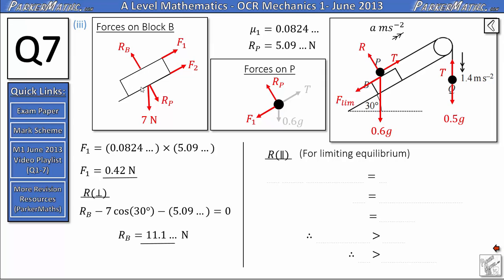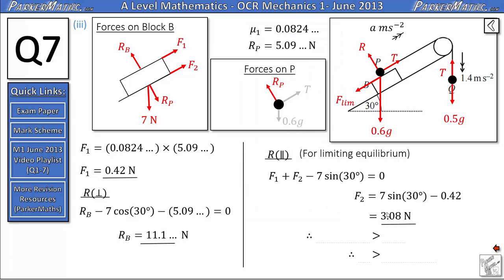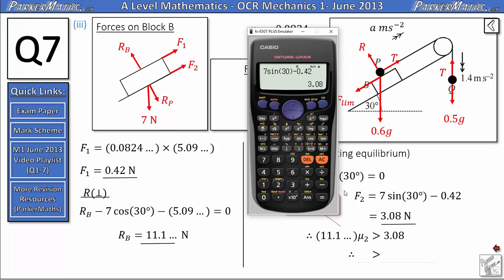Next I resolve parallel to the slope, remembering the block is in limiting equilibrium. F1 plus F2 acting up the slope balances 7 sin 30 acting down the slope, so F1 plus F2 minus 7 sin 30 equals 0. Isolating F2, we get F2 equals 7 sin 30 minus F1 equals 7 sin 30 minus 0.42, which gives 3.08 newtons. So the friction required between the slope and the block to keep it in equilibrium is 3.08 newtons. For the block to remain in equilibrium, the limiting friction must be greater than or equal to the friction required, so μ₂ times Rb must be greater than or equal to 3.08, and dividing through by 11.1 gives the inequality for μ₂.